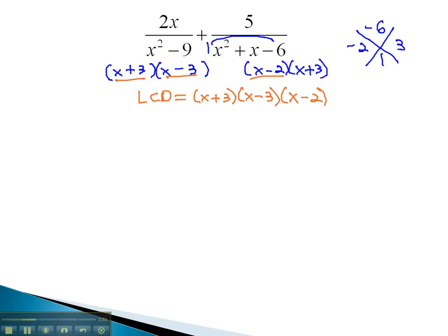Now, in order to get a common denominator, we will build up each denominator by multiplying by the missing factors. This first denominator is missing the factor x minus 2, so we will multiply numerator and denominator by x minus 2. When we distribute in the numerator, 2x times x is 2x squared, minus 2x times 2, which is 4x, over the common denominator, x minus 2, x plus 3, x minus 3.